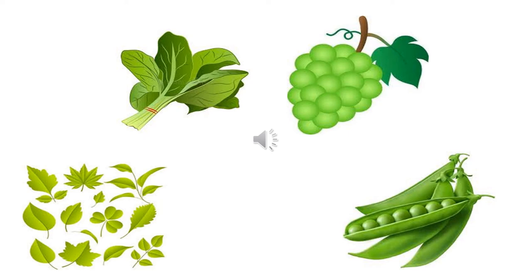So children, remember: when we mix two primary colors, a secondary color is formed. You can try mixing these colors and see the new color that is formed. Enjoy your activity, and remember children — orange, purple, and green are secondary colors. See you.